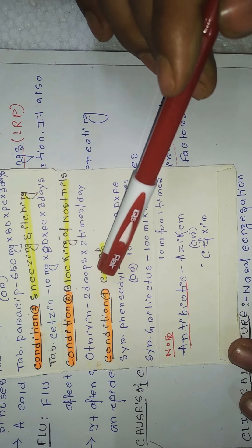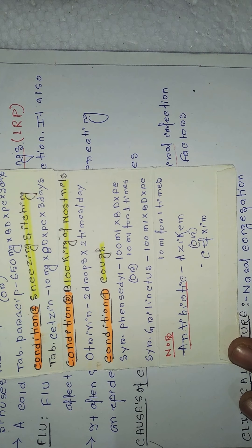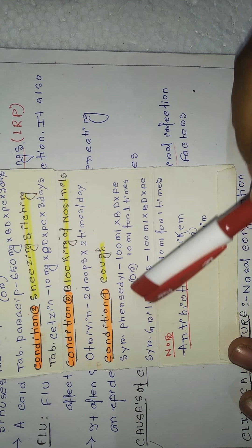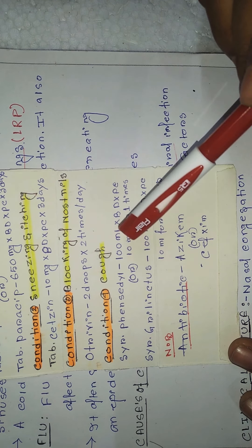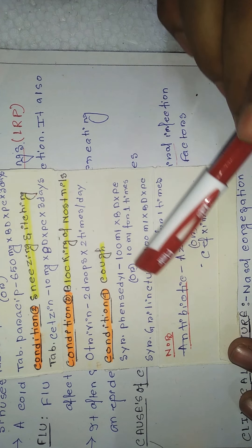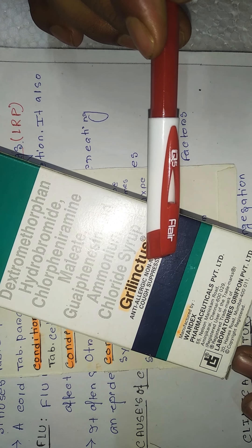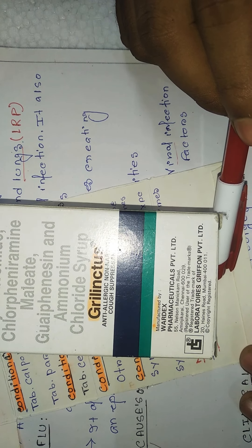One more condition: if the patient complains with cough along with cold and flu, you will give Penshidal 100 mg BD, PC, and 10 mg one time. If this drug is not available, you can go with Grilinctus. Grilinctus has an anti-allergic, non-narcotic, and cough suppressant effect. This is the drug of choice for cough, and you may prefer it for patients with cold and flu along with cough.